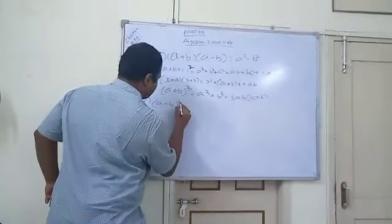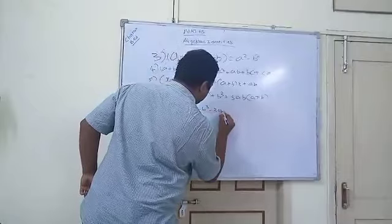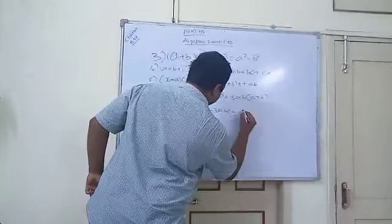A minus B whole cube. This is equal to A cube minus B cube minus 3AB into A minus B.